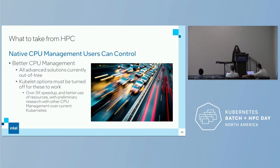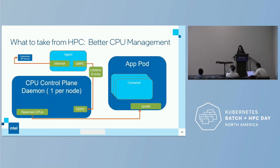We want native CPU management that users can control. All advanced solutions are currently out of tree — Nokia CPU pooler, CRRM — and people are running their own daemons on nodes. The kubelet options must be turned off for these to work, meaning you have to turn off those managers I showed you. We've done tests turning these off and playing with CPU management, and we're getting over a three times speedup — better use of resources — compared to current Kubernetes. We've basically made it possible to have mixed cores: pinned cores, non-pinned cores, and we're adding isolated CPU type cores as well.